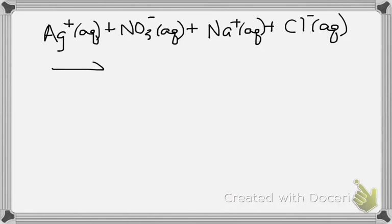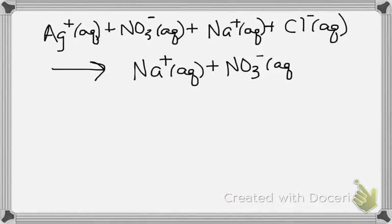So what was on the product side? Yes, but we had Na still floating around, right? And we also had NO3 still floating around, so that's why those are aqueous. Then you had AgCl as a solid, okay. So this is the complete ionic equation.